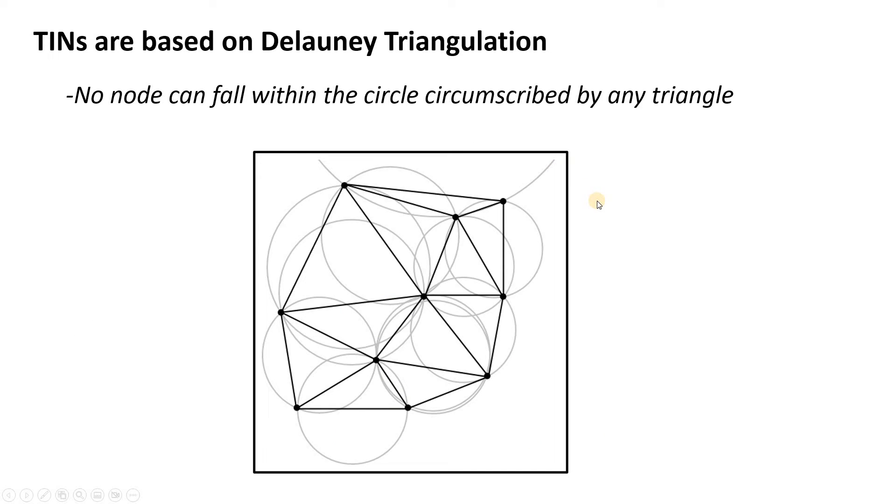One thing to also note about TINs is they are generally based on what's called Delaunay triangulation. And this is the idea that if you have a network of connected triangles and you take any given triangle, actually, why don't we look at this one right here, and you circumscribe a circle that goes through all three of the vertexes, you cannot have any nodes that fall within that circle. So you draw a circle around every triangle, and none of the nodes can fall within the circles. That's how you govern the spacing of the nodes and the size of the triangles.